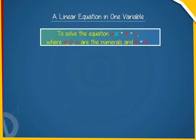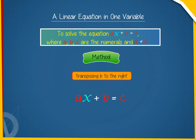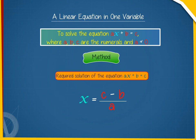To solve the equation ax plus b equals c, where a, b, c are numerals and a not equals 0, we transpose b to the right to get ax equals c minus b. Transposing a to the right, we get x equals c minus b divided by a. This is the required solution for the equation ax plus b equals c.